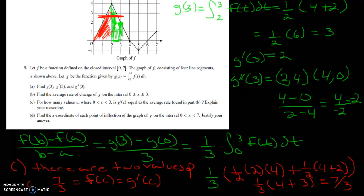Part D says find the x coordinate of each point of inflection of the graph of g on the interval from 0 to 7. Justify your answer. So a point of inflection is this is a graph of the derivative shown. So a point of inflection is where it changes direction and the slope also equaled 0.